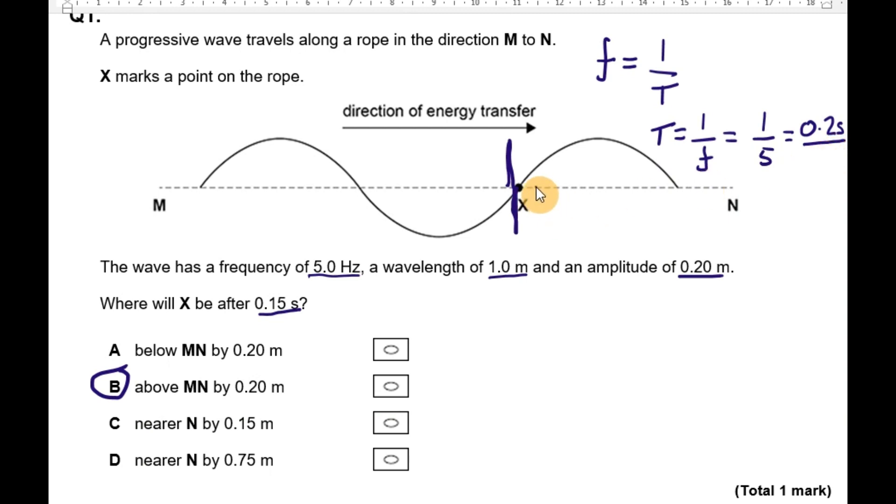In a quarter of the cycle, X will move down to the point of maximum negative displacement. After half the cycle, it'll move back to its rest point. In three quarters of its cycle, it will be at its maximum positive displacement above the line.